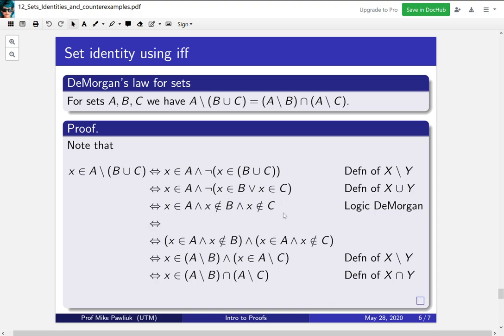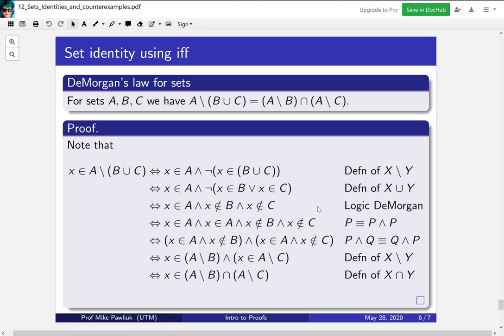Now, because we've done all this work, now it's clear the key step that we have to add. We need to say that we can just add an extra x ∈ A. So let's do that and we'll justify it. Since P is logically equivalent to P ∧ P, we can introduce another x ∈ A here. And then from here, we can rearrange all of the ANDs to get what we want. There we go. This is a complete proof of DeMorgan's Law for sets.